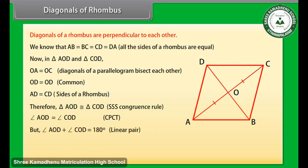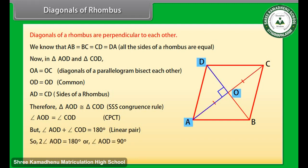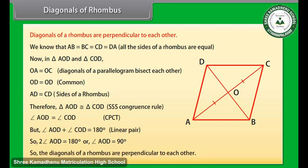But angle AOD plus angle COD is 180 degrees because these are linear pair angles. So 2 times angle AOD is equal to 180 degrees, or angle AOD is equal to 90 degrees. So the diagonals of a rhombus are perpendicular to each other.